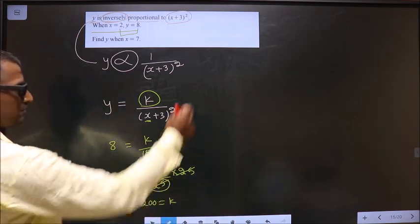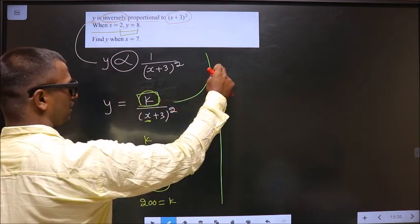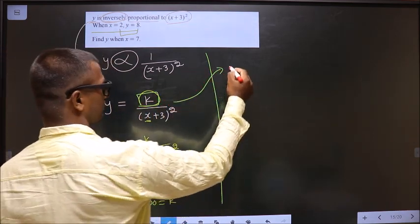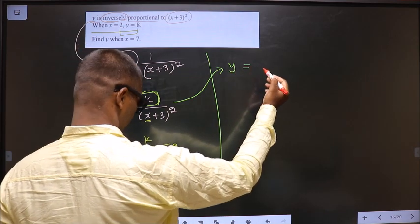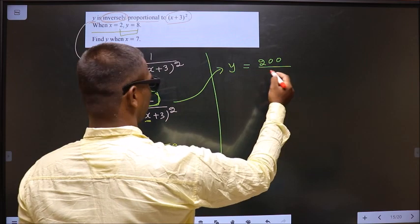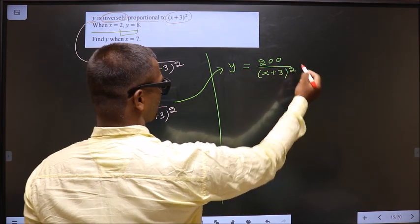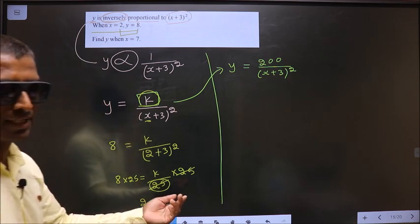Now, replace k here. This equation now becomes y equal to 200 by x plus 3 whole square.